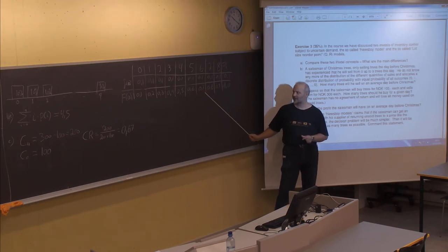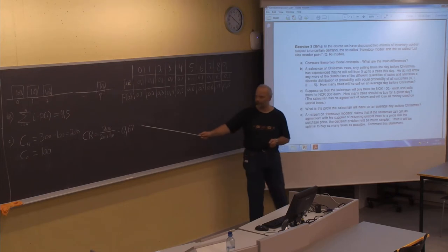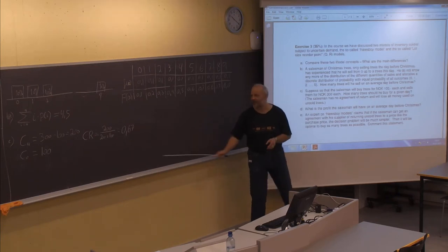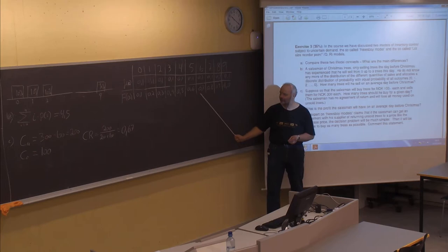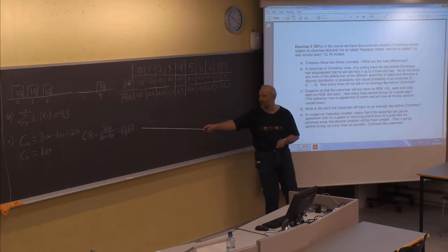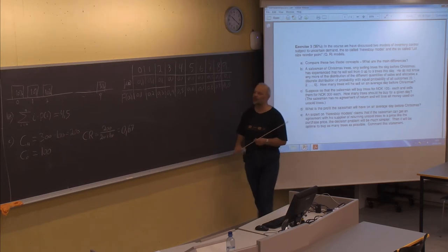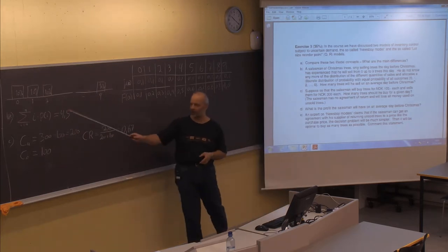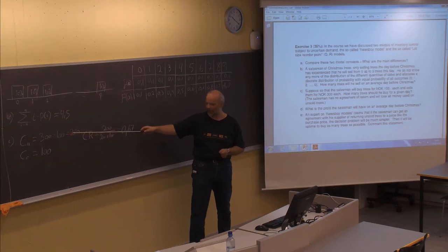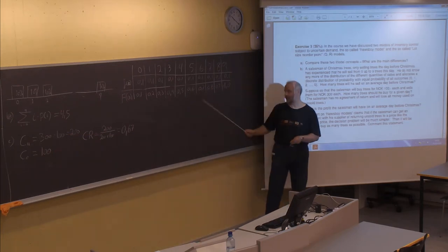The closest cumulative probability is 0.7, or 70%. The value 0.67 is somewhere between 60% and 70%, but it is closest to 70%. And also, since we have a higher underage than overage cost, we can be sure that we should round up the odds in this case.